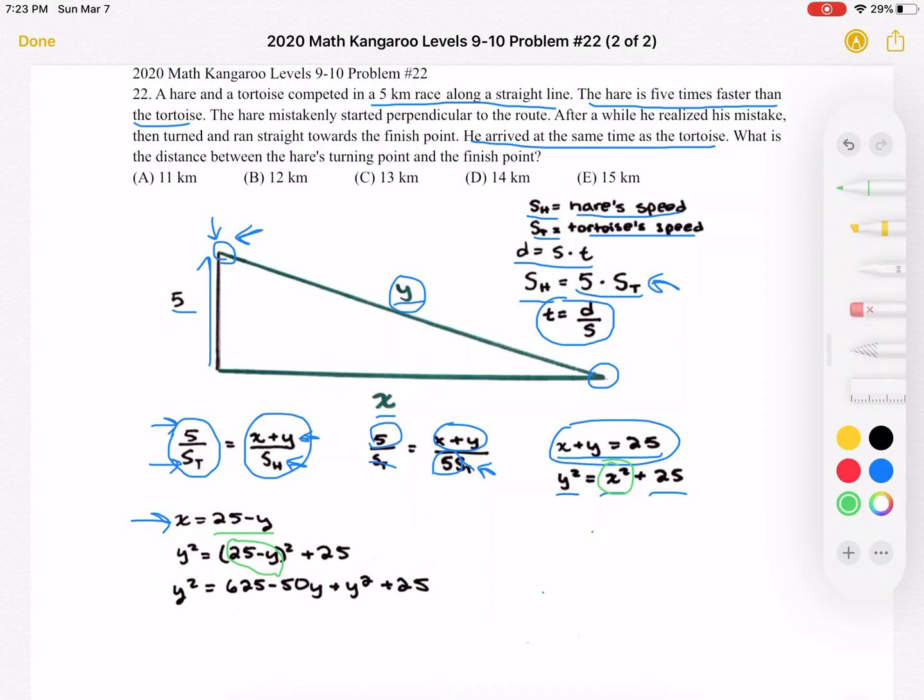Next, we expand, and we'll get Y squared is equal to 625 minus 50Y plus Y squared plus 25.